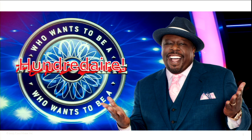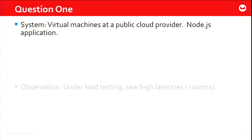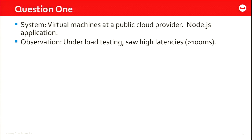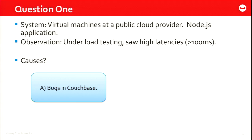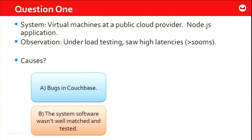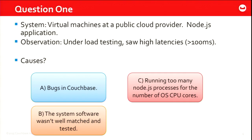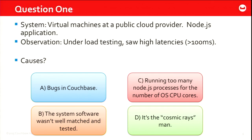Question one: given a system with virtual machines at a public cloud provider running a Node.js application, under load testing there are high latencies greater than 100 milliseconds — your goal is to be under 100 milliseconds. What are the possible causes? Is it A, bugs in Couchbase; B, the system software wasn't well-matched and tested; C, running too many Node.js processes for the number of CPU cores; or D, cosmic rays? Just to give you a hint — it's never A.